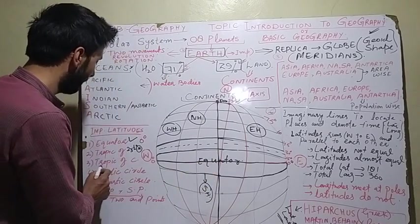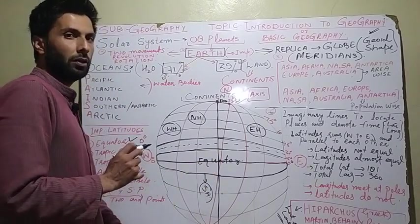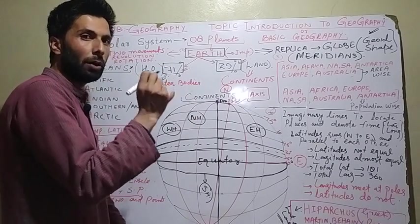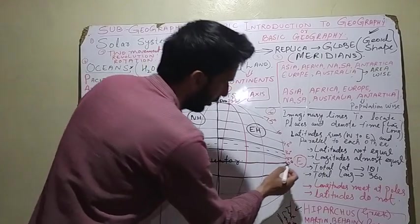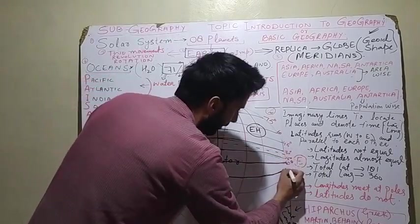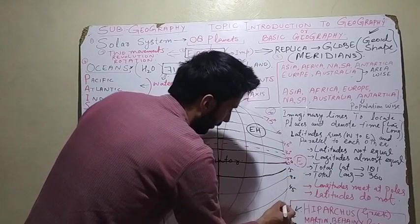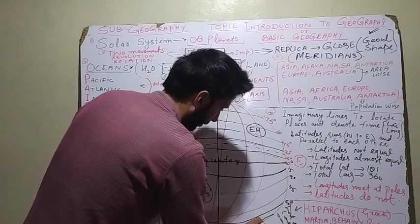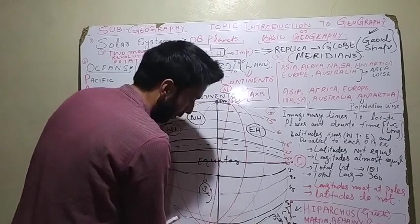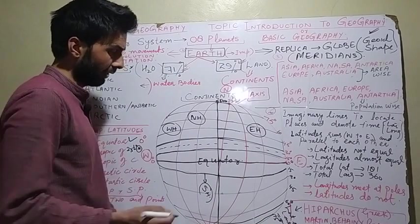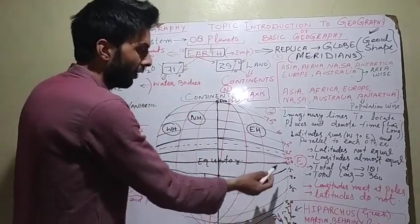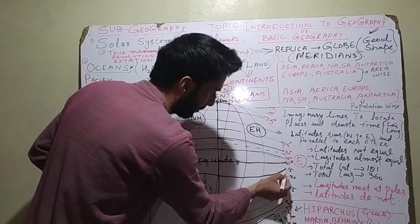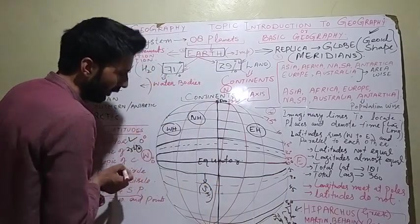Another important latitude is the Tropic of Capricorn. Its measurement is also 23.5 degrees but the difference is 'S' — meaning south, in the southern hemisphere. Going down from the equator: 0, 15, 30 — and between 15 and 30 south, we have the Tropic of Capricorn at 23.5 degrees south. I'm drawing a shaded line here between 15 and 30 degrees south to represent the Tropic of Capricorn.